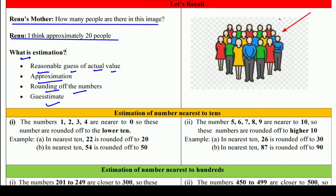अब estimation of number nearest to tens करते हैं। Ones, tens और hundreds — place value तो आप जानते हैं। जब nearest to 10 estimation करनी हो, तो हम unit place देखते हैं। The numbers 1, 2, 3, 4 are nearer to zero — so these numbers are rounded off to the lower 10. यानि अगर unit place five से कम है, तो पहले वाले 10 पर, नहीं तो next वाले 10 पर।